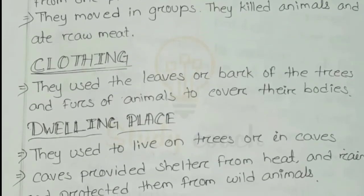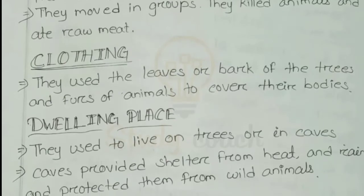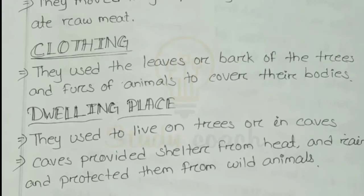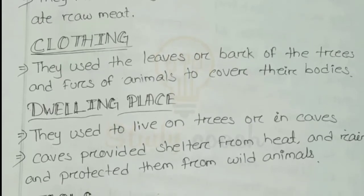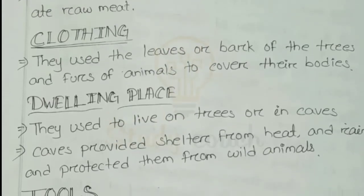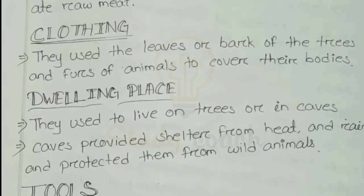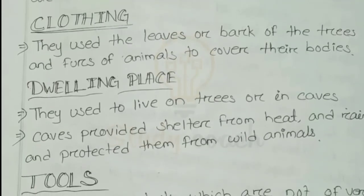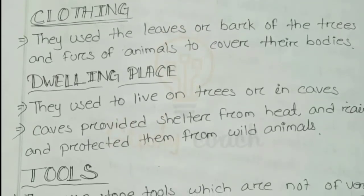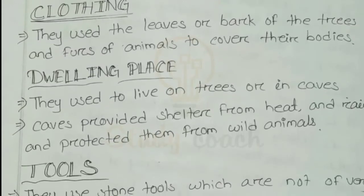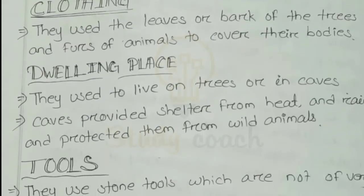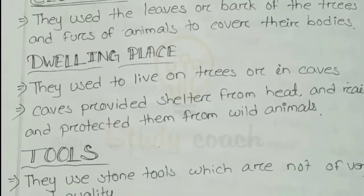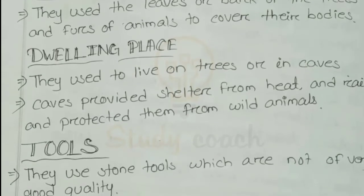Regarding clothing, they used to use bark of trees and furs of animals to cover their bodies. For dwelling, they used to live on trees or in caves. Caves provided shelter from heat and rain, and protected them from wild animals.